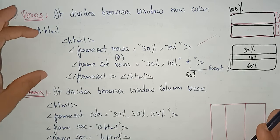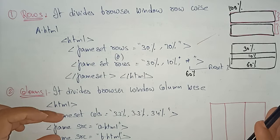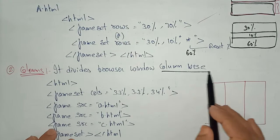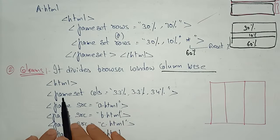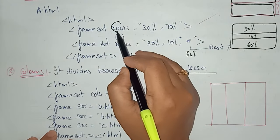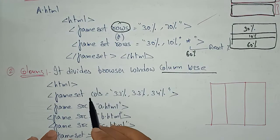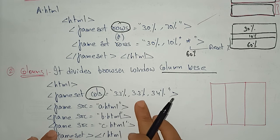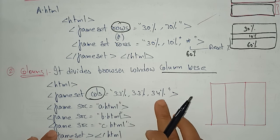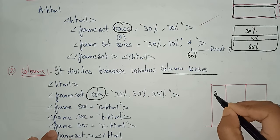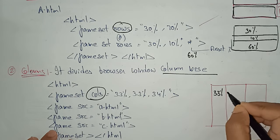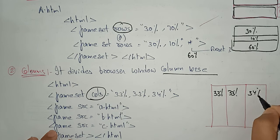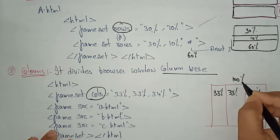In the same way, you can divide the browser window column-wise. The only difference is that instead of rows you write cols. For example: cols equal to 33, 33, 33, 34 — dividing the page into three columns totaling 100%.